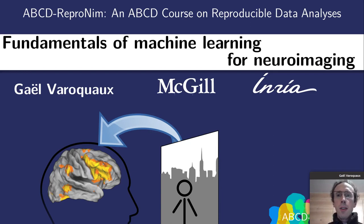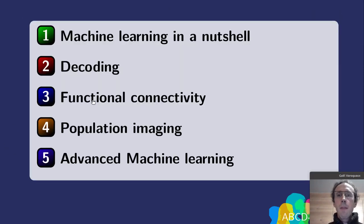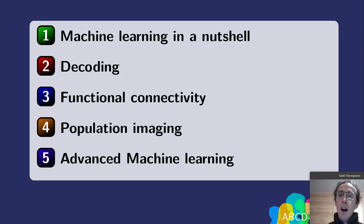I'm Gael Marocco and today I'll talk about the fundamentals of machine learning for neuroimaging. The outline of my talk is the following: I'll first start with a short introduction to machine learning, then talk about decoding — predicting behavior from brain images — then cover machine learning from functional connectivity, touch on population imaging, and discuss some aspects of advanced machine learning.